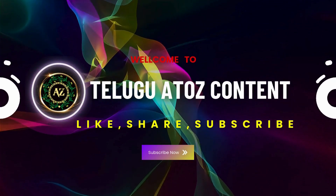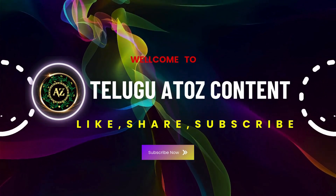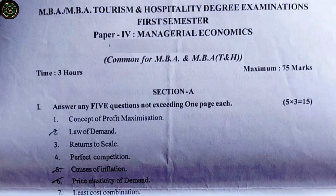For more videos, subscribe to A to Z Content. MBA First Semester paper for Managerial Economics. Time: three hours. Maximum 75 marks. Section A: Answer any five questions, not exceeding one page each. Five times three equals 15 marks.